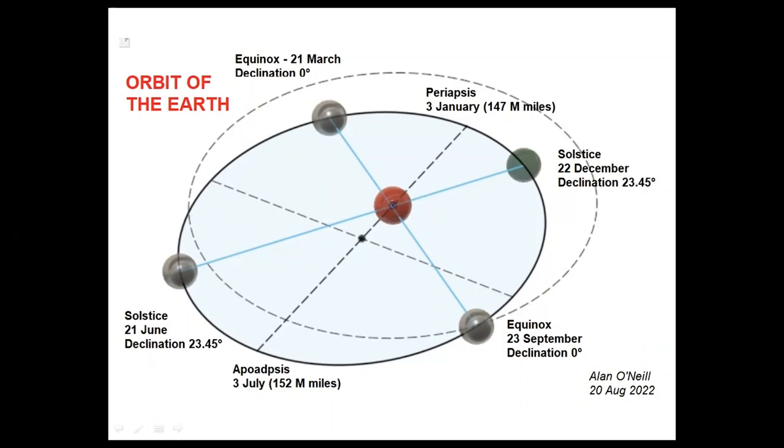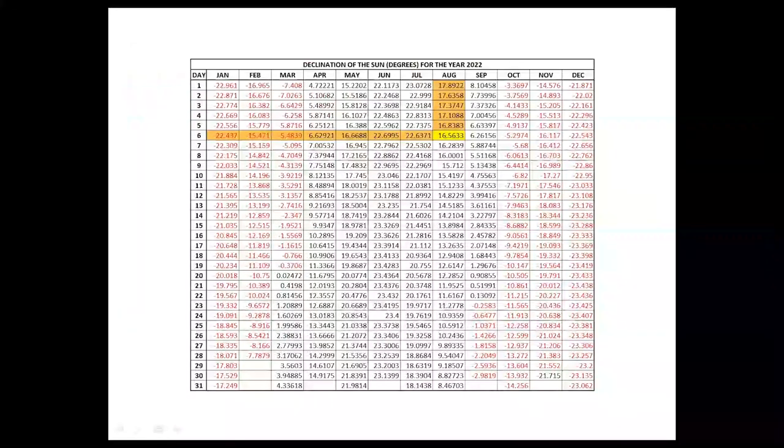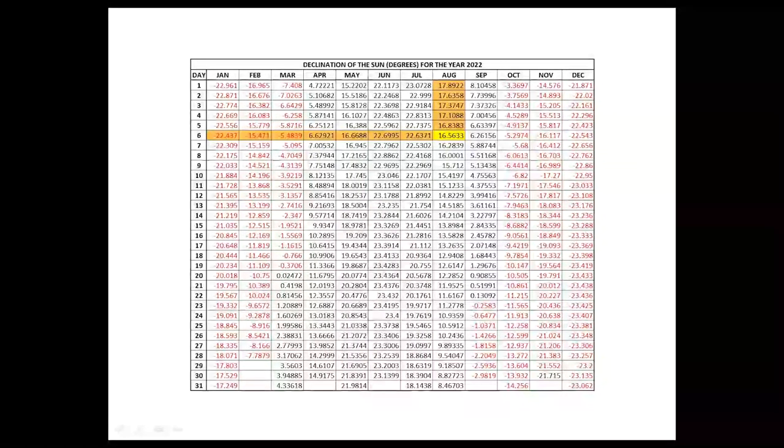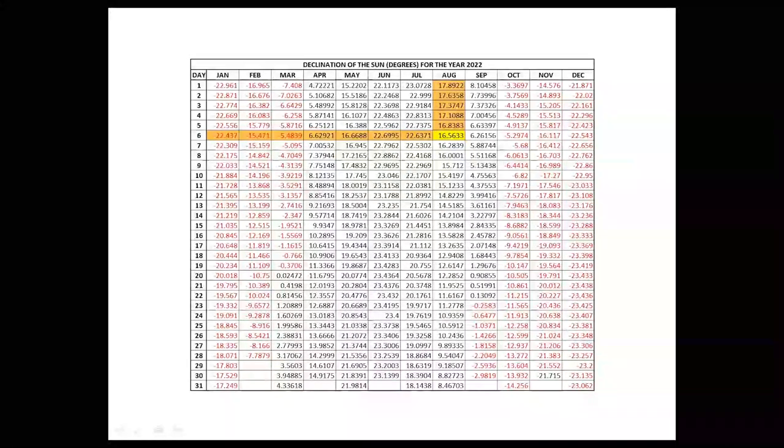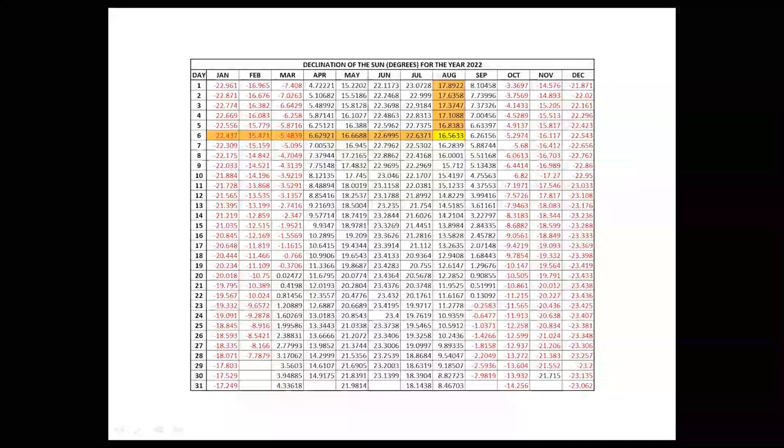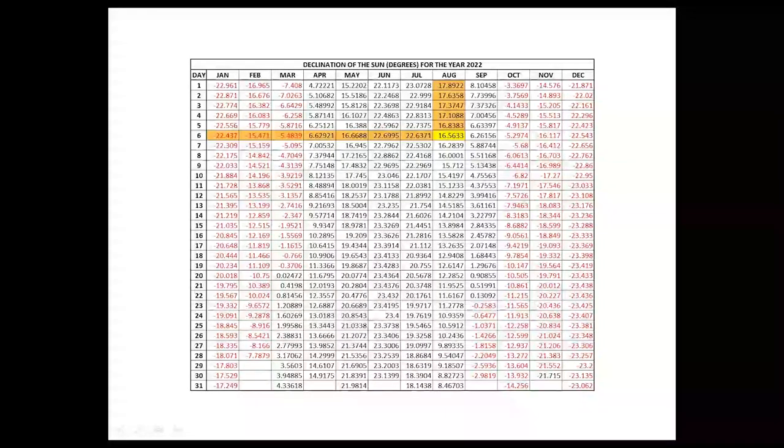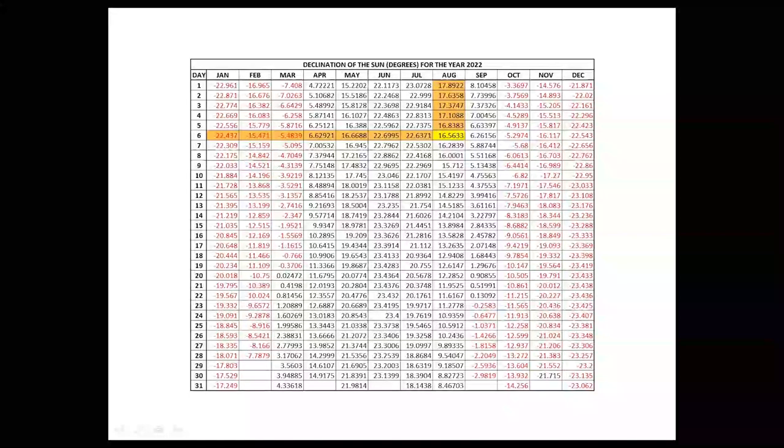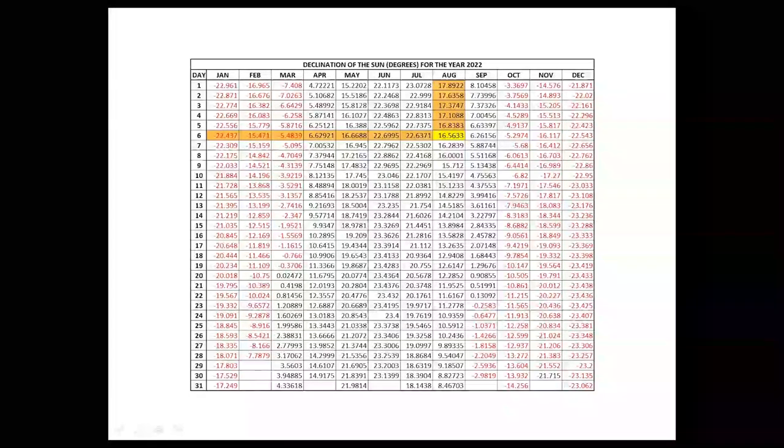The data needed to identify the tilt on any given day was pre-calculated and early navigators and explorers had published reference tables. Today we can easily access this information on the internet. Here is the declination table for the year 2022. You can see that on the 6th of August the angle of declination was a positive 16.5633 degrees. We add or subtract the declination correction from our earlier calculation and that reveals our latitude north or south of the equator. You need a new table for each year because the angle shifts a little bit every year until it resets with the correction of an extra day in the leap year. I'll explain this in a moment.